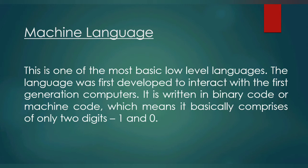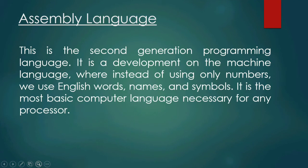The next type of language is assembly language. Assembly language is the advanced version of machine language. Apart from zeros and ones, in assembly language we can also use some English names and words. So compared to machine language, assembly language is a little bit easier to write programs in.